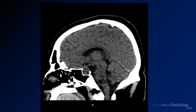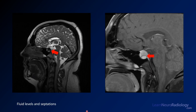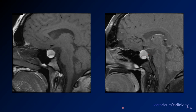On the CT images you can see the sella is expanded — there's osseous expansion of the sella, which means it's something that's been there for a while. Again, a benign lesion but locally aggressive. On the T2 and post-contrast images you can see a little bit of septation, as well as some fluid levels or hemorrhage levels, which clues you in that it might be an adenoma.